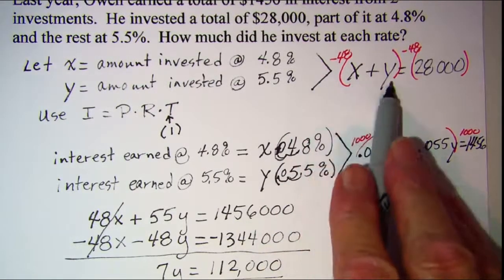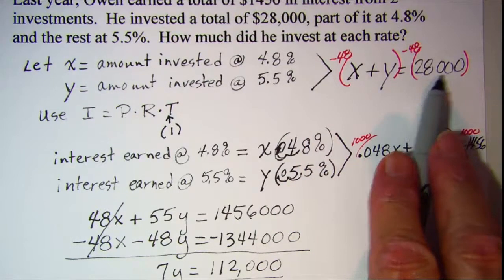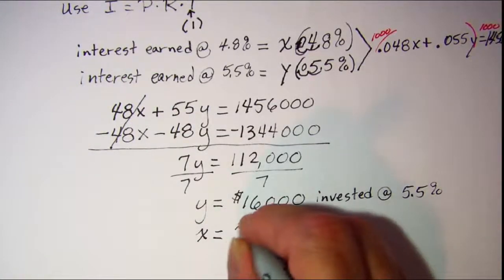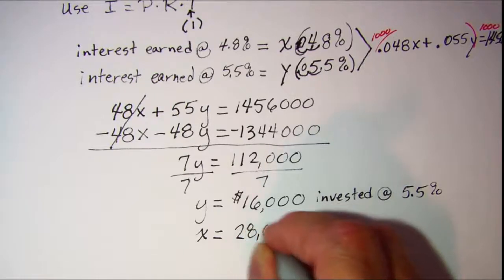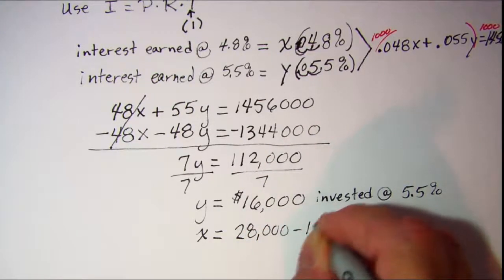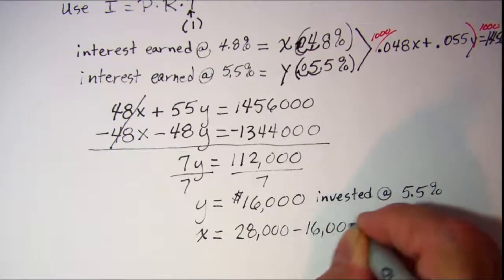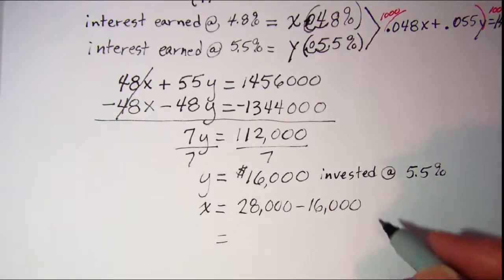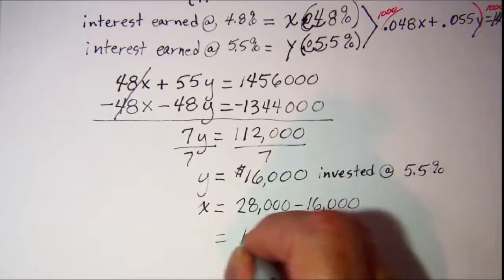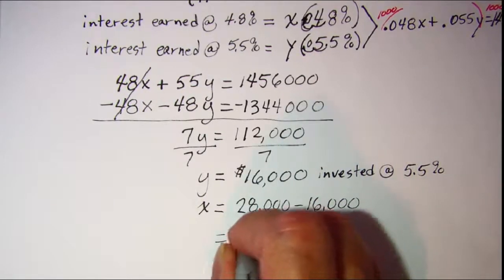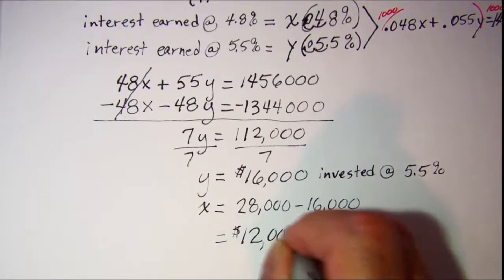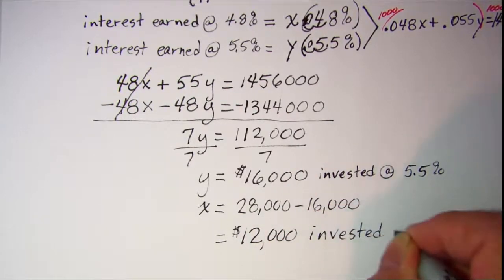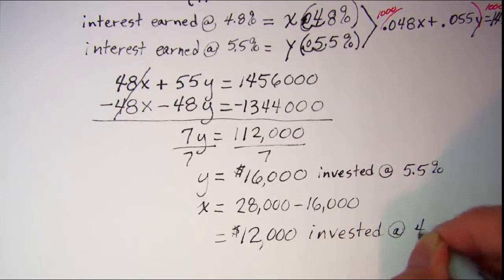And then to find the amount invested at 4.8%, I know that the two investments added up to $28,000, so x then is going to be $28,000 minus $16,000, which is $12,000 invested at 4.8%.